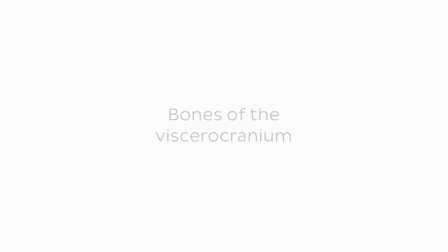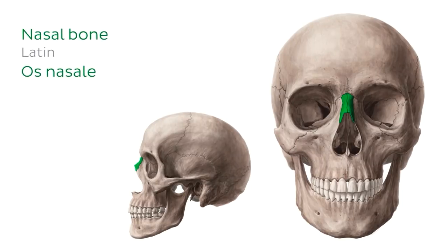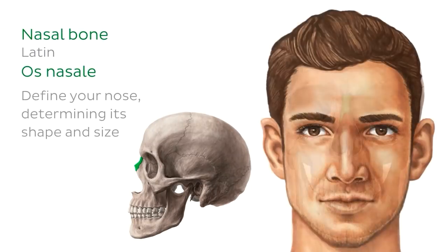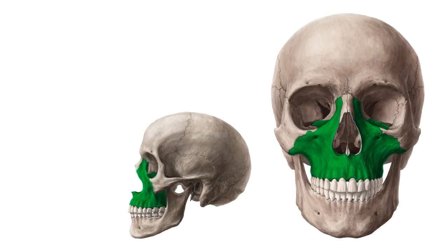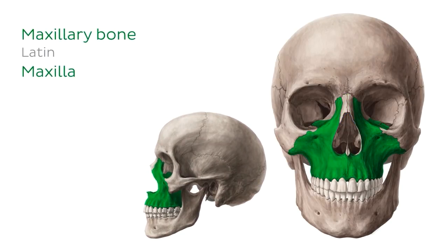We'll begin our tutorial with the bones of the viscerocranium. Starting at the center of the face, we find two small paired bones known as the nasal bones. These bones define your nose, determining its shape and size. These are the anterior and lateral views of your nasal bones. Their superior borders and main bodies form the bridge of the nose, while the inferior borders connect with the nasal cartilage to form the superior margin of the nasal aperture. Moving upwards or laterally, we can see the maxillae highlighted in green from an anterior and lateral perspective. The maxillae is a paired bone consisting of the right and left maxilla, which fuse in the midline.